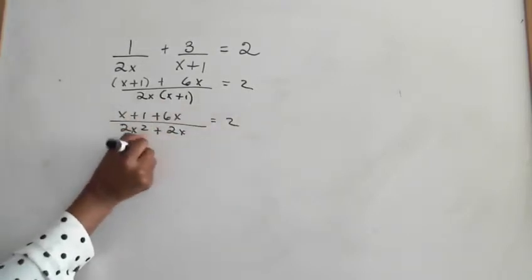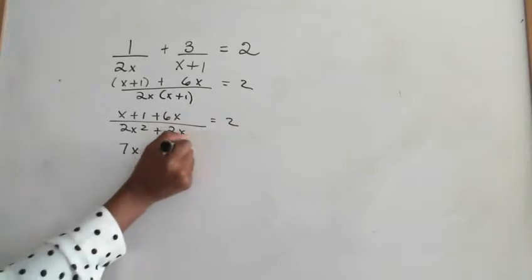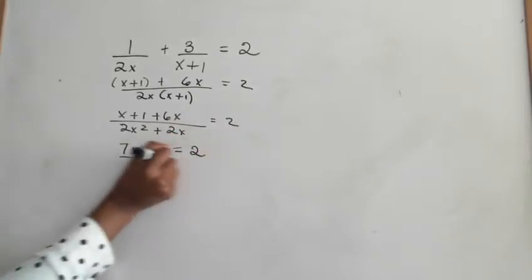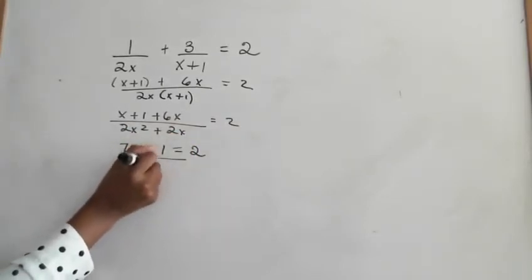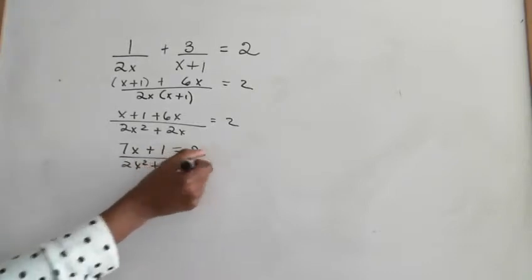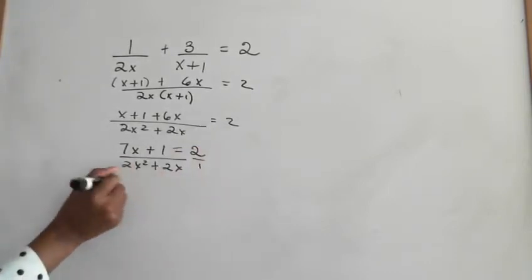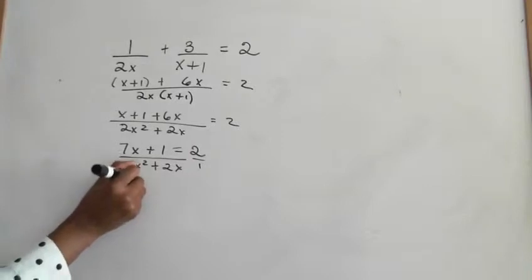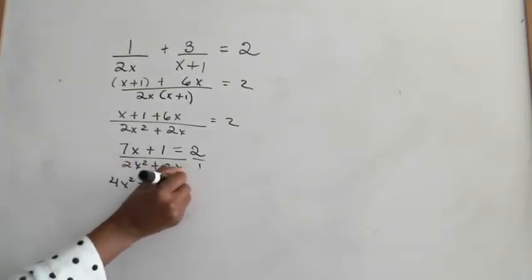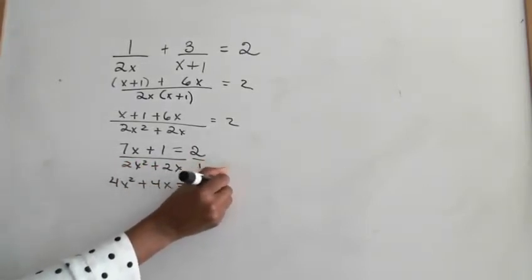7x, this x plus 6x, 7x plus 1 is equal to 2 over 2x squared plus 2x. This is the same as 2 over 1, you can cross multiply. 2 times 2x squared is 4x squared plus 4x is equal to 7x plus 1.